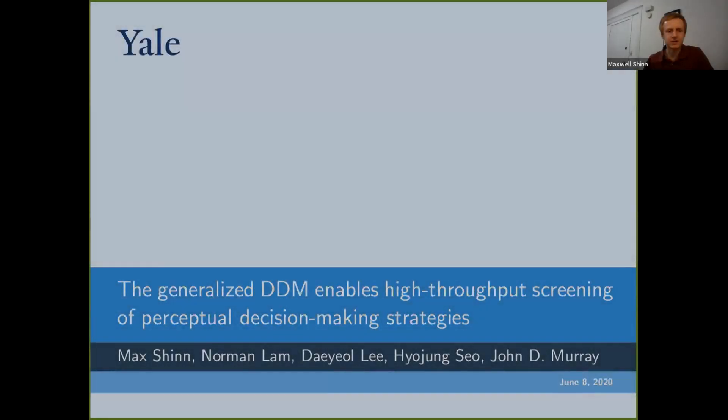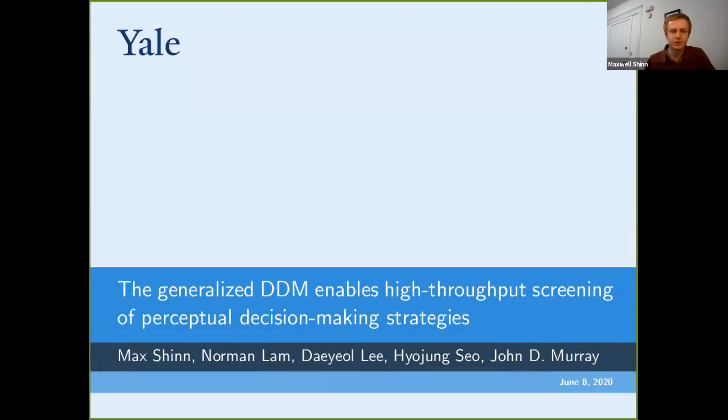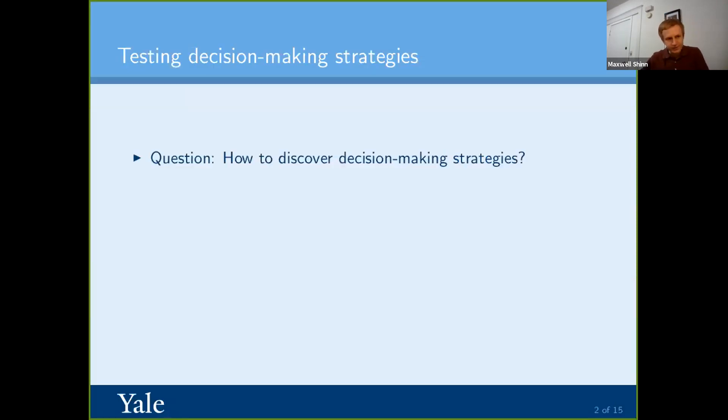Yeah, so I'm Max, and I work with John Murray and Dale Lee. One of the central questions of cognitive neuroscience is to try and understand the strategies that are used within the brain. And in particular in decision making, we want to understand the strategies used for decision making. One way that we can do this is to build computational models and then try and compare those models to data.